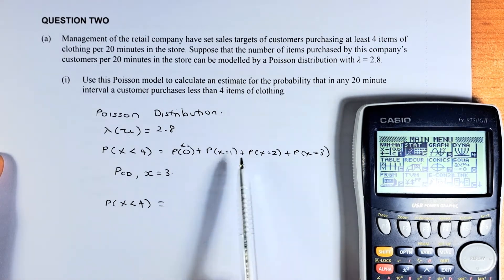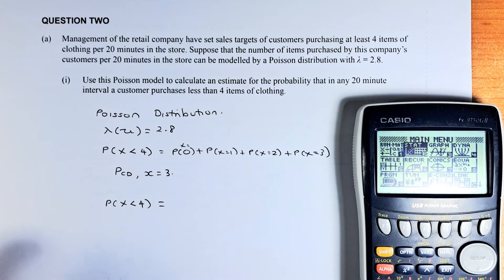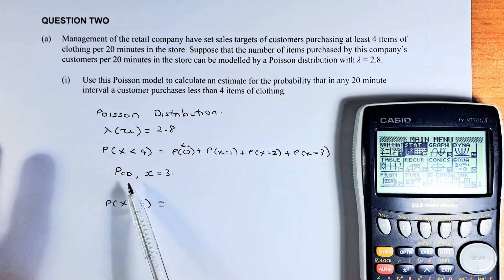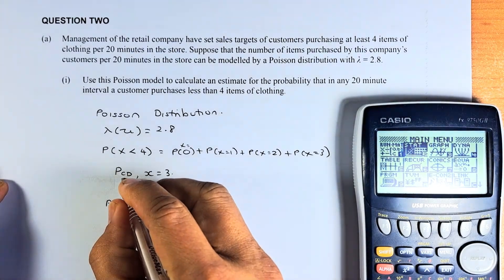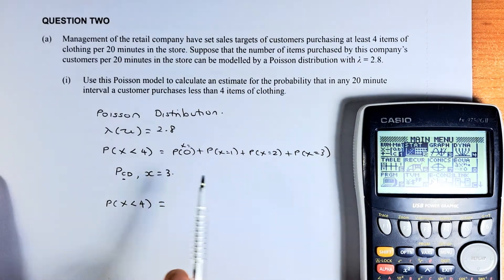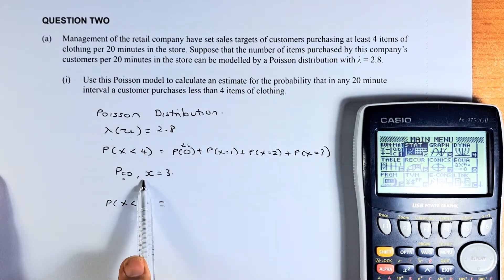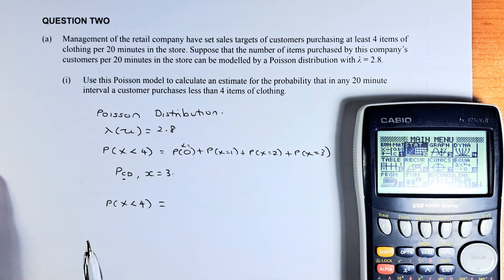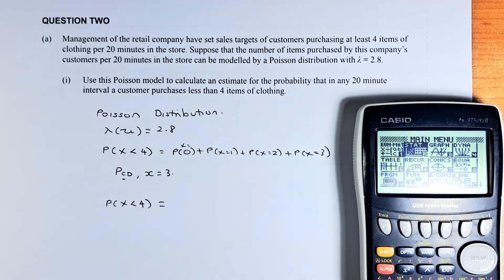So we are looking at 0, 1, 2, 3. This is straightforward. You can use the PCD. PCD, the C stands for Cumulative. So accumulate from 0 to wherever you stop. In this case, it stops at 3. So we are going to put X equals to 3. To calculate the probability, we just put in the calculator.